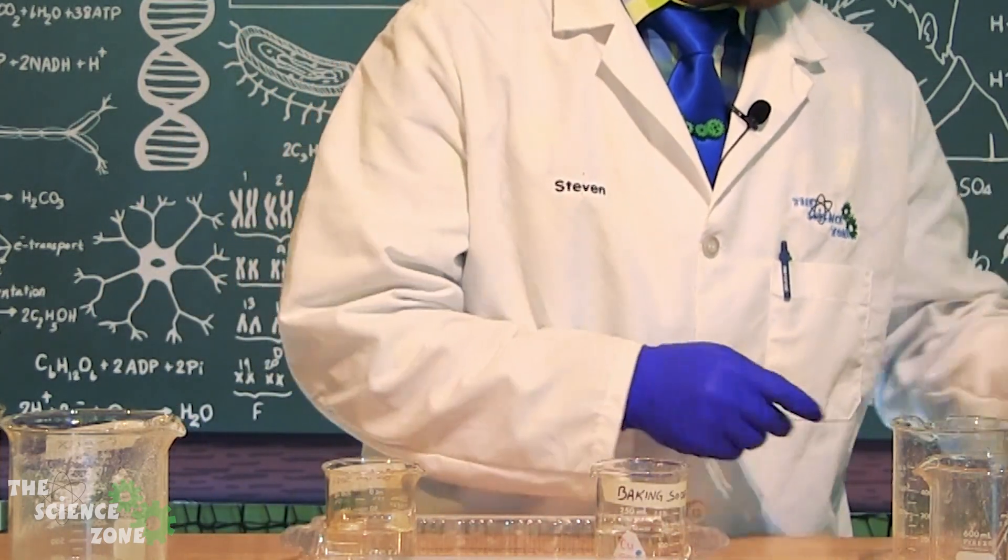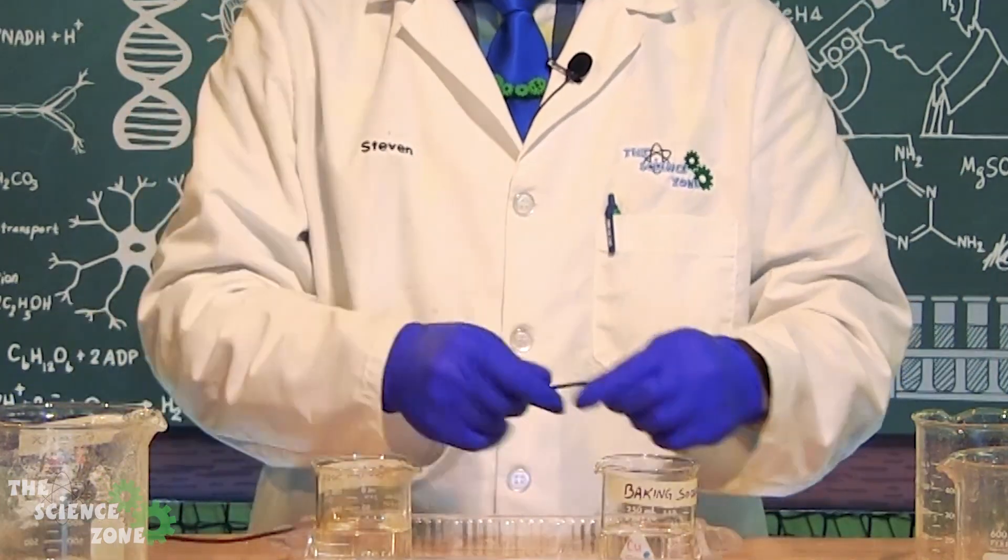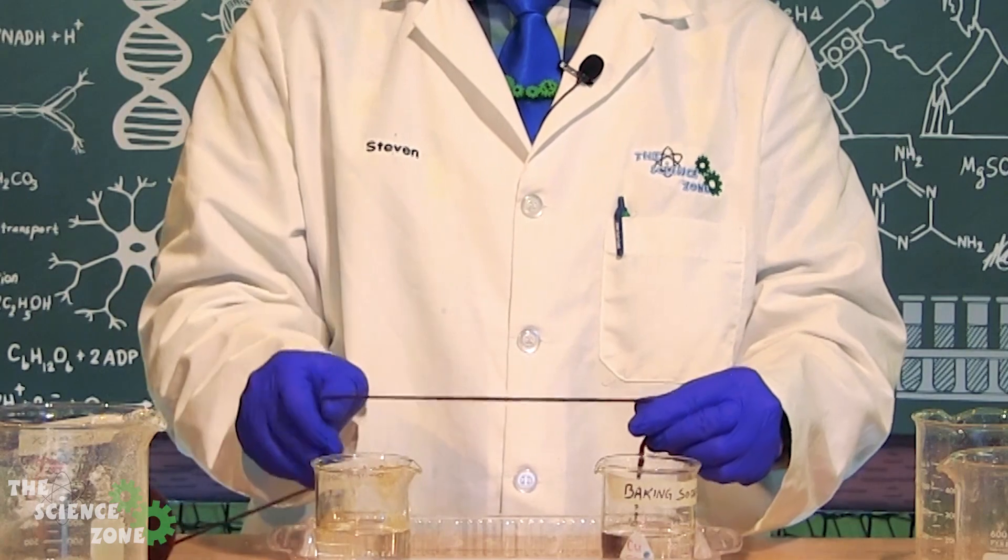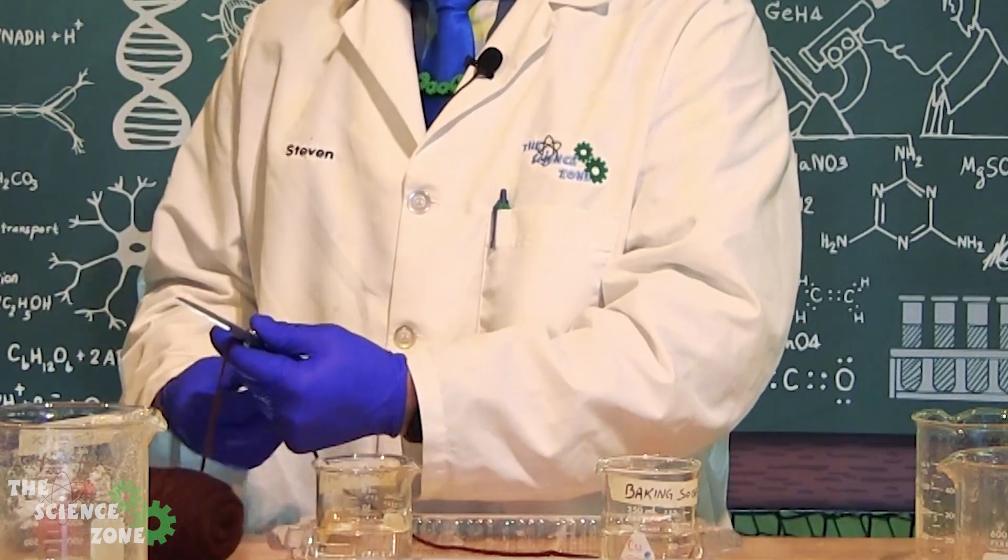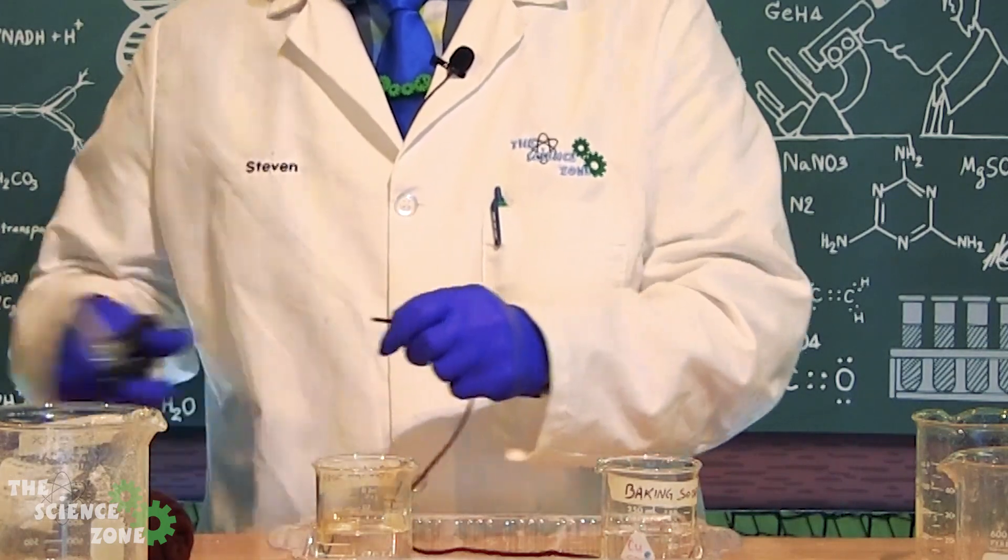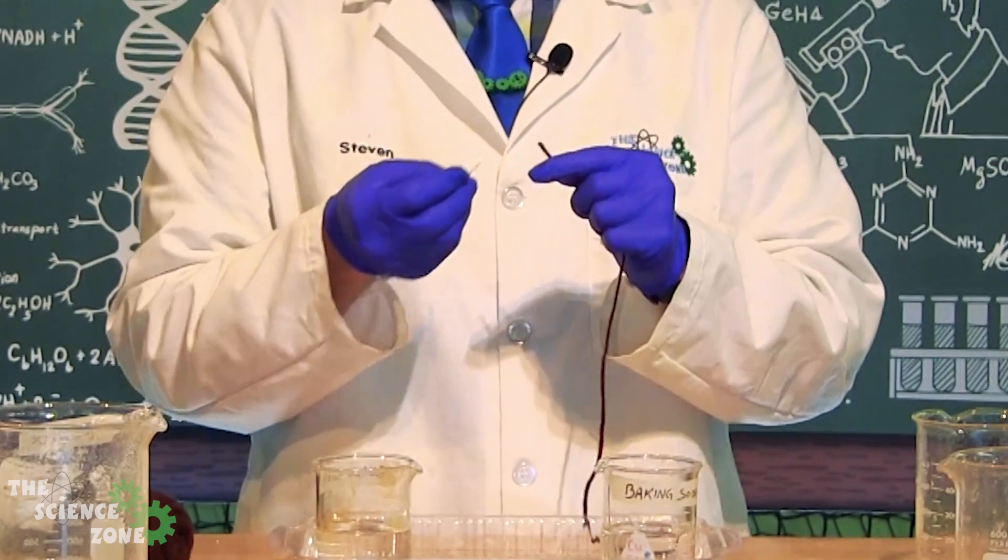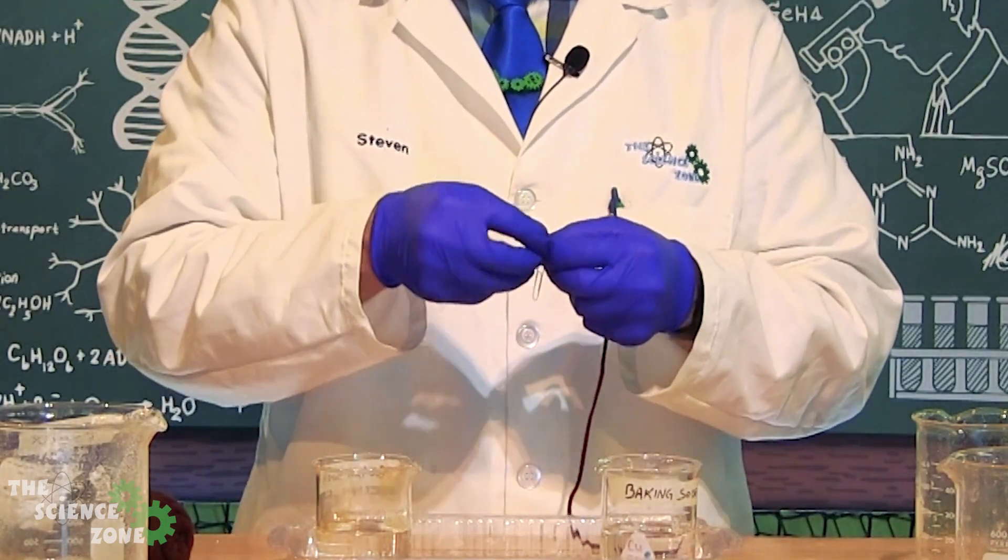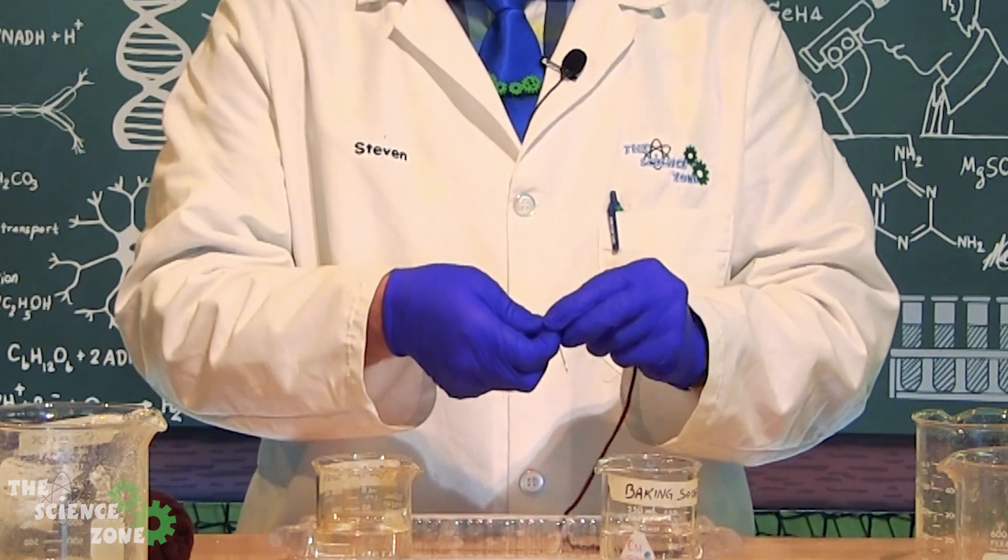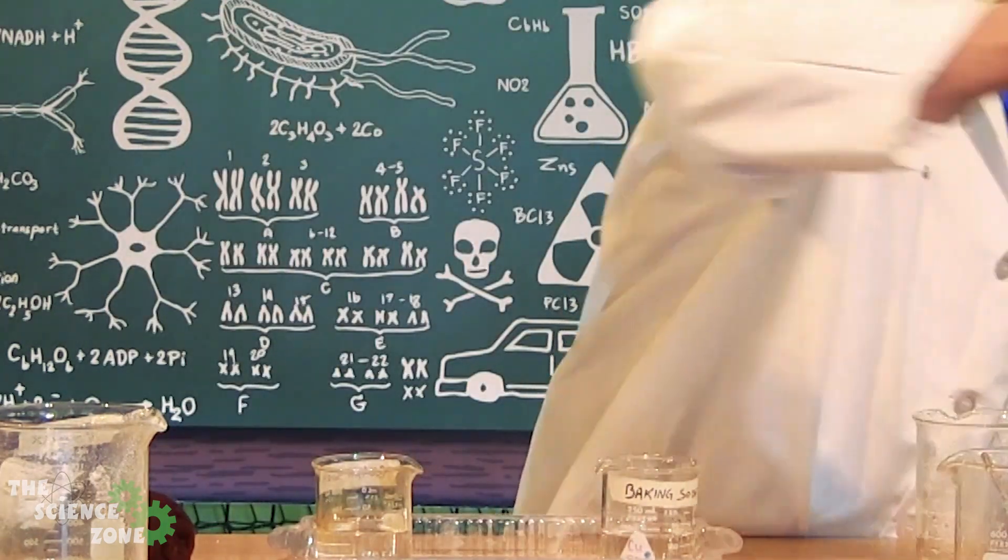Next we're going to add some string or yarn to connect each beaker. Cut a length of yarn that will allow the ends to be fully submerged in the solution and allow for a gentle smile to form in the yarn between the two beakers. To help weight the string down, we'll grab some paper clips, tie them to each end, and that will help weigh down the yarn so it doesn't float up.